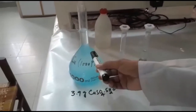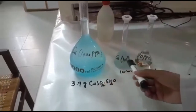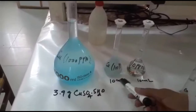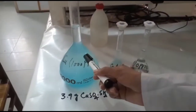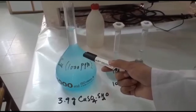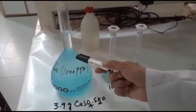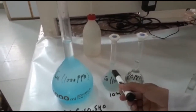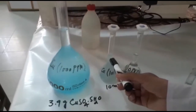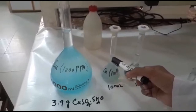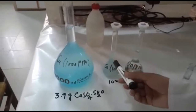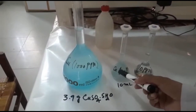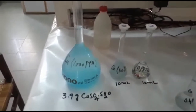We will further dilute the 1000 ppm to 100 ppm. For this, we need to take 10 mL from this 1000 ppm stock solution and then transfer it into a 100 mL volumetric flask and make its volume up to the mark. This solution will be the 100 ppm copper sub-stock solution.